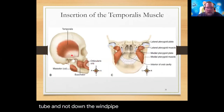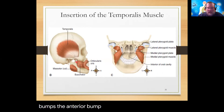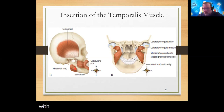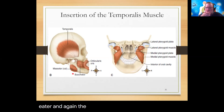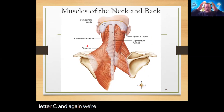With most surrounding musculature removed, the temporalis is shown clearly, revealing how broad its origin is before converging to insert on a small process of the mandible. The masseter has been cut away as well, revealing more of the buccinator underneath. Previously the masseter covered much of the buccinator. The masseter handles jaw clenching, the buccinator handles puckering, and the temporalis also helps elevate the mandible.